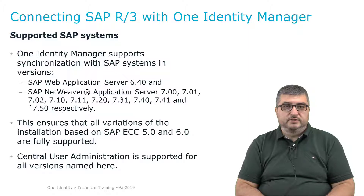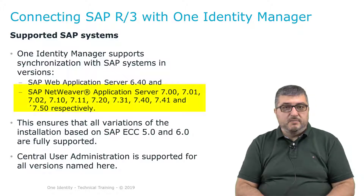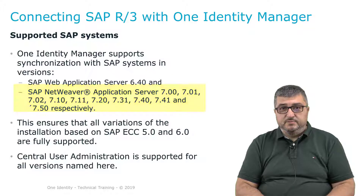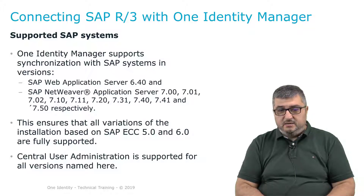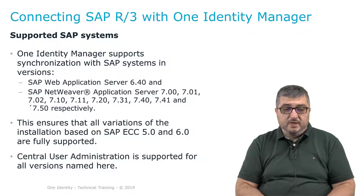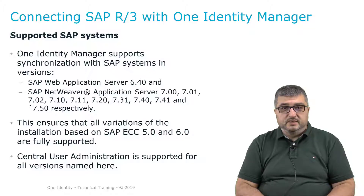One Identity Manager's SAP Connector supports SAP ABAP-based instances from version 7.0 to 7.5 and SAP S4HANA version 18.09. If you want to connect to such an instance in the ECC R3 or S4HANA versions of the SAP environment, the application server ABAP must be available as a prerequisite, since the SAP Connector does not support a Java application server.